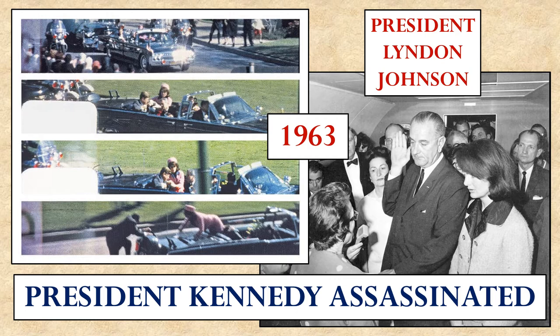Even as the country may have felt it was turning a corner for the better, bad things continued to happen. In 1963, President Kennedy was assassinated while visiting the city of Dallas, Texas. A gunman fired shots from a building overlooking the president's motorcade route, killing him and wounding some others. In the aftermath, Vice President Lyndon Johnson became president of the United States. Lyndon Johnson was a southerner from Texas who had grown up in poverty and understood the trials of those who felt oppressed by society.